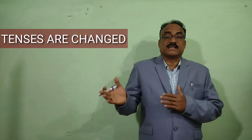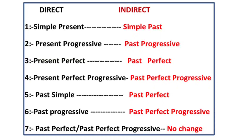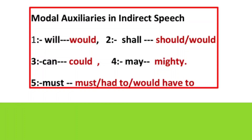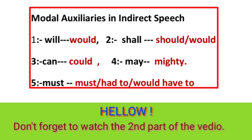Look at the rules of tense changes in indirect speech. Simple present changes into past simple. Present progressive changes into past progressive. Present perfect changes into past perfect. Present perfect progressive changes into past perfect progressive. Past simple changes into past perfect. Past progressive changes into past perfect progressive. Past perfect and past perfect progressive — no change at all. Remember: modal changes — 'will' changes into 'would'; 'shall' changes into 'should' or 'would'; 'can' changes into 'could'; 'may' changes into 'might'; 'must' changes into 'must' or 'have to' or 'would have to'.